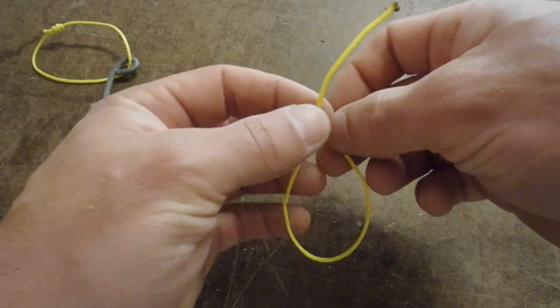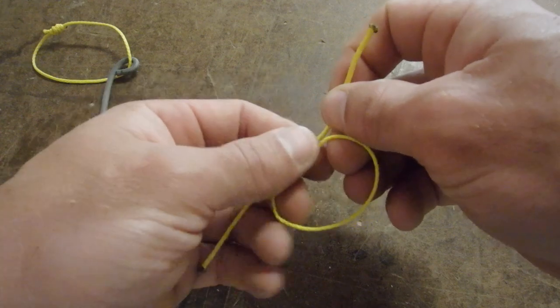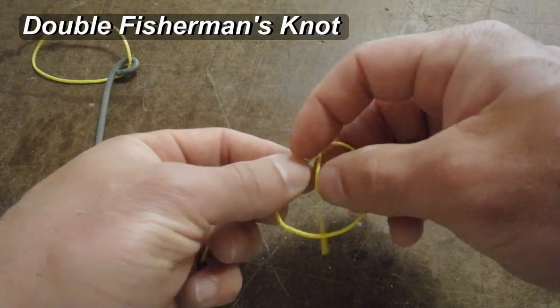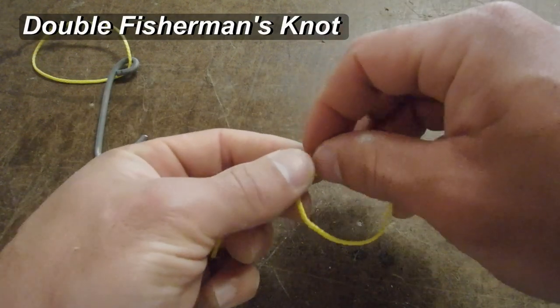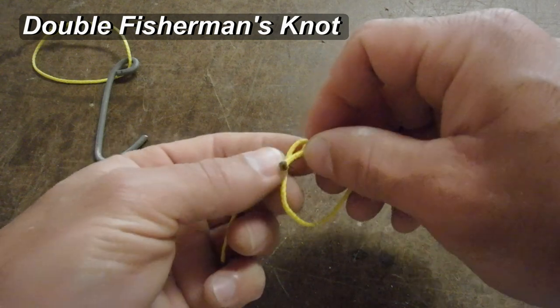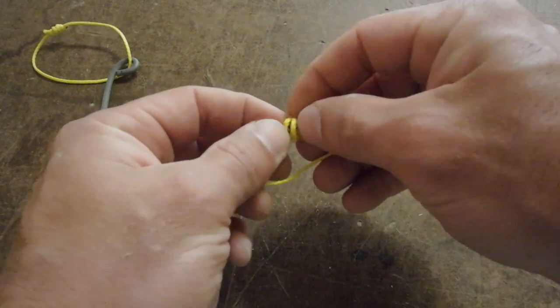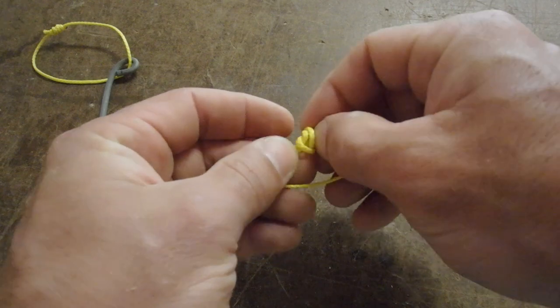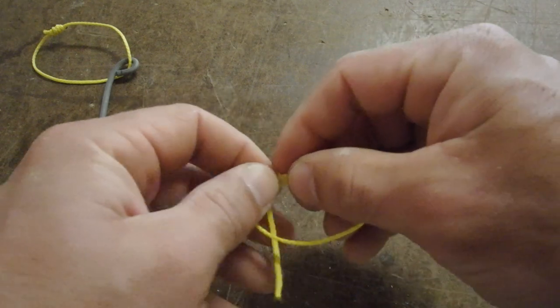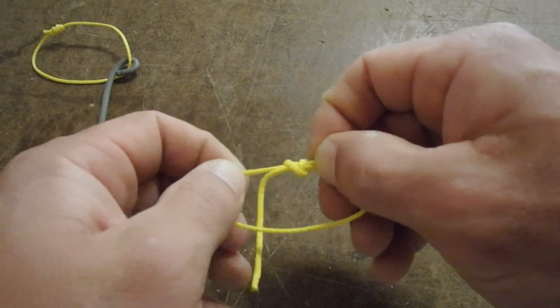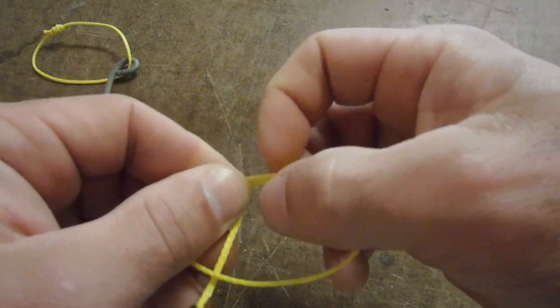Now we have to create our loop. I like to use what's called a double fisherman's knot to do that. There's a lot of good how to tie knot videos online that you can research. So I'm not going to have a definitive guide on how to tie a double fisherman's knot but it's not too difficult and it's a real handy knot.